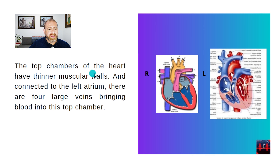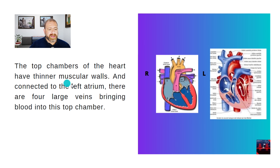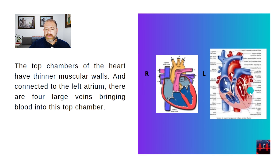The top chambers of the heart have thinner muscular walls. There are four large veins bringing blood into the left atrium chamber. The ventricles have larger, thicker muscular walls compared to the atrium — both the right atrium and the left atrium. Both are atria — that's the plural.